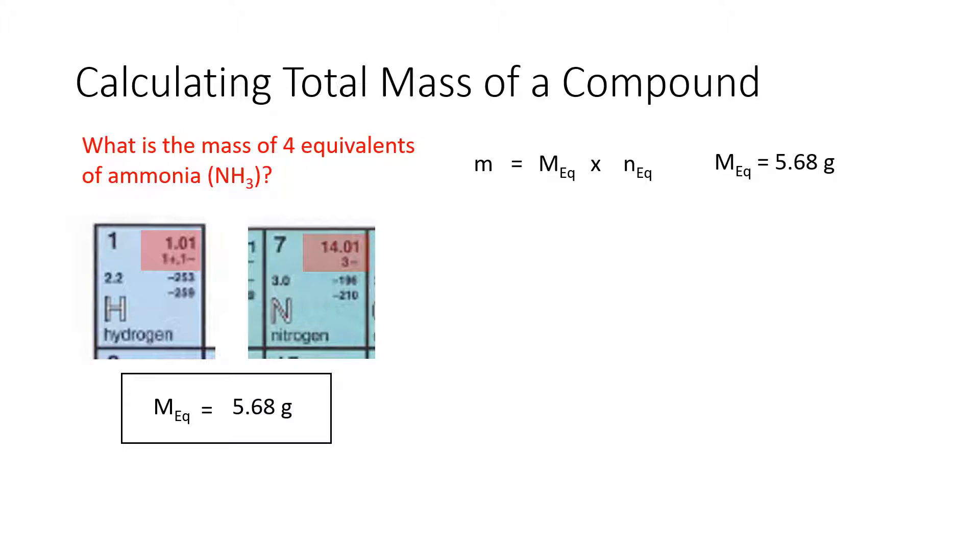In this case we know that the mass of one equivalent is 5.68 grams. We know that the number of equivalents is 4, we can see that in the question. We then plug into our formula: 5.68 grams times 4 which gives us 22.72 grams, which means that if we take four equivalents and add them up, 5.68 times 4 is going to give us 22.72 grams of a material that's ready to react.